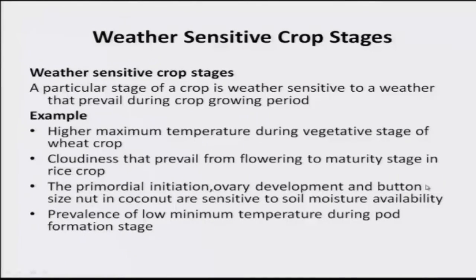There are weather sensitive crop stages. A particular stage of a crop is weather sensitive to weather that prevailed during the crop growing period. For example, cotton is grown across different countries — when boll bursting occurs, around 150 days, if it rains, it is highly weather sensitive. Accordingly, we have to develop our agro-advisories: suppose it is raining during boll bursting, postpone picking and go for the next sunny day for harvesting.